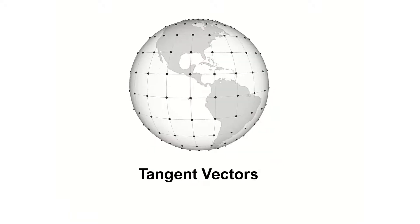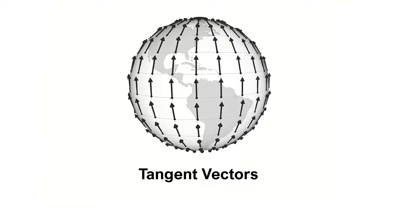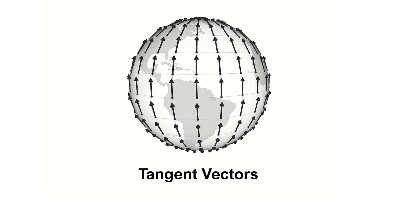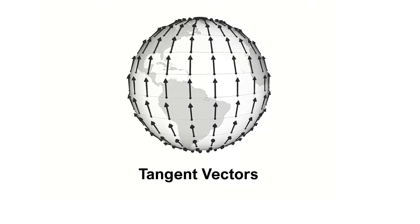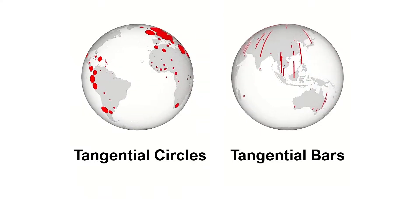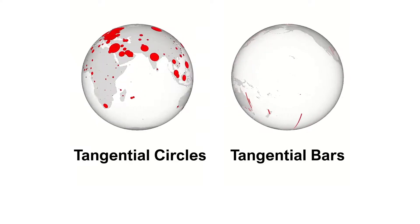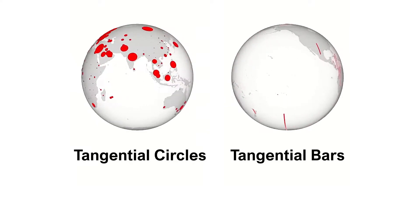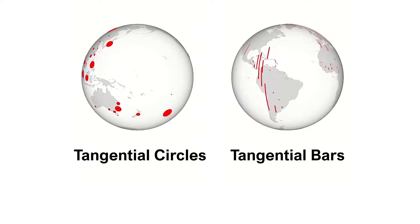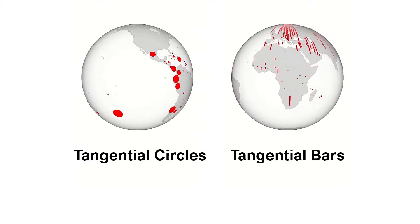The other vector directions on the surface of the globe are tangent vectors. In this particular example, all tangent vectors are facing the North Pole. Aligning circles and bars along the tangent vectors produces tangential circles and tangential bar visualization idioms. The tangential circles idiom uses spherical cap area as visual channel, while the tangential bar idiom uses arc lengths.